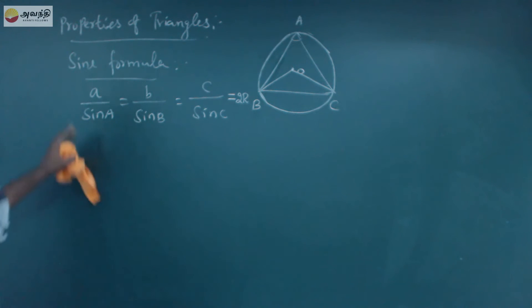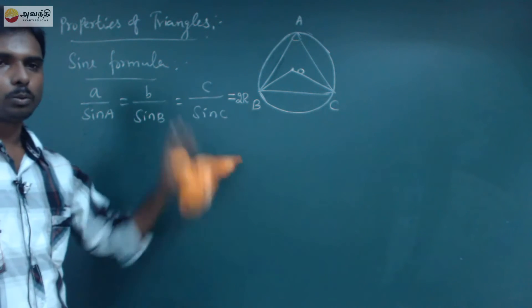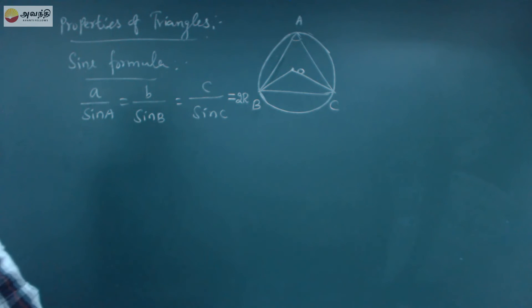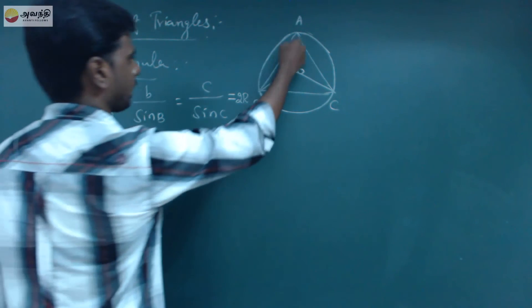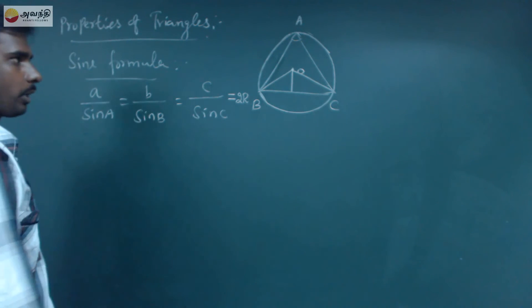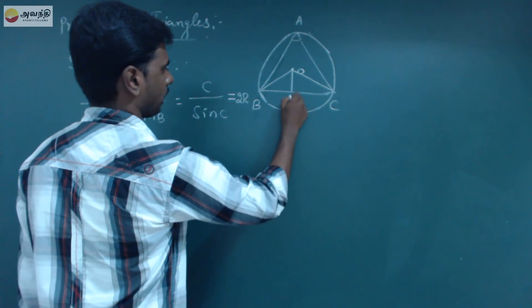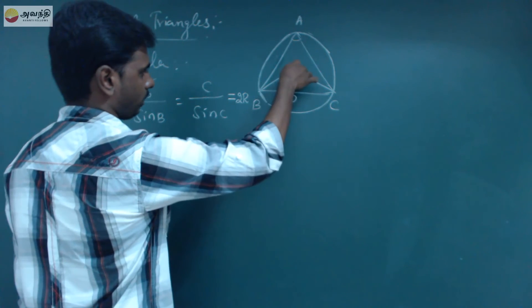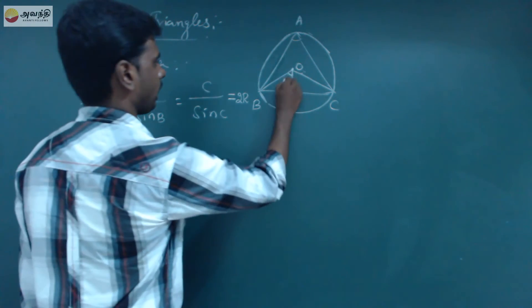Now what we are doing is trying to prove this equation. We will try to prove that a/sinA = 2R. In this triangle, I drop a line from B perpendicular to BC. In the center point on the line, we can use the name D. So the line B, O, D makes an angle — we can call it angle A.